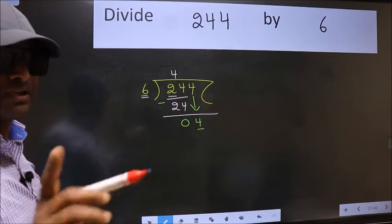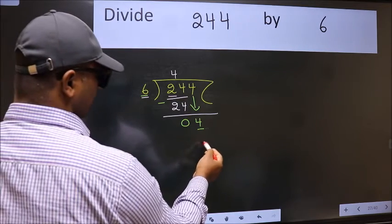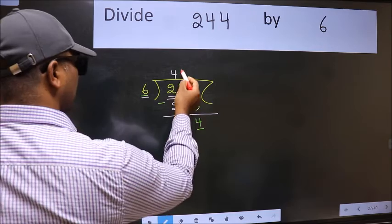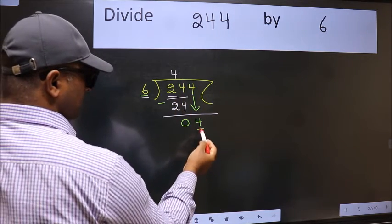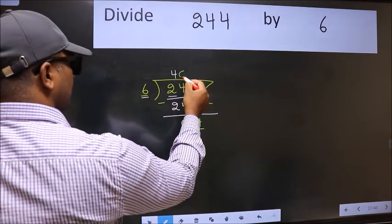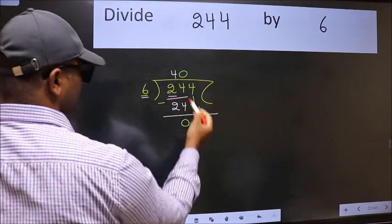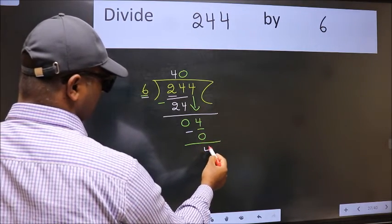Instead of that, what you should think of doing is, which number should we take here. If I take 1, we will get 6. But 6 is larger than 4. So what we do is, we take 0. So 6 into 0, 0. Now we subtract. We get 4.